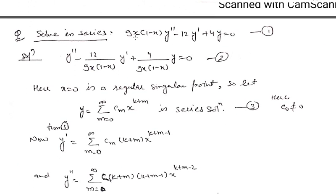After finding any one case, we will find the recurrence relation between c's and put the value of c in the assumed solution. We go through an example which satisfies the first case, in which k1 and k2 are not equal and their difference is also not an integer. The differential equation to solve in series form is: 9x(1 minus x) y double prime minus 12 y prime plus 4y equals 0. First we write it in standard form: y double prime minus 12 over 9x(1 minus x) y prime plus 4 over 9x(1 minus x) y equals 0. From here we get x equals 0 is a regular singular point, so we apply Frobenius method.